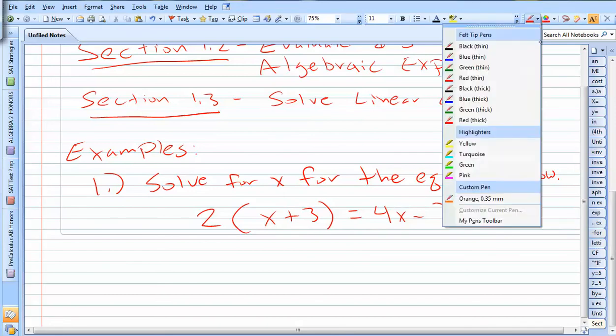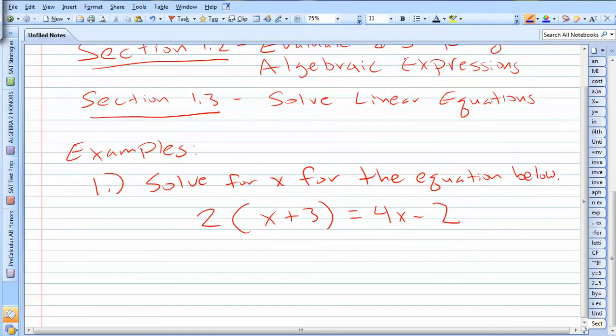So if you remember from the principles we learned in section 1.2, we'll want to distribute as well as combine like terms. So we distribute the 2, we get 2x plus 6, and of course we've still got 4x minus 2 on the other side.